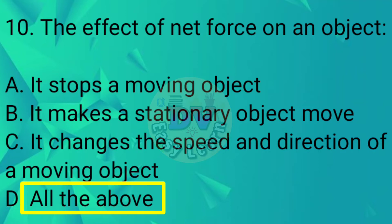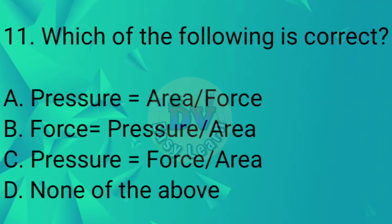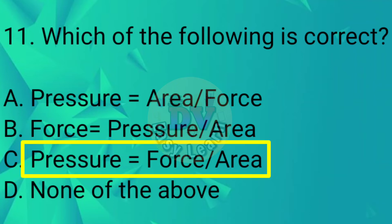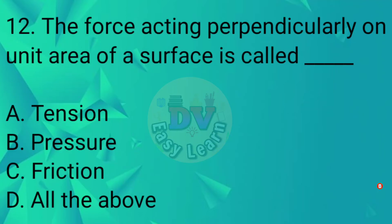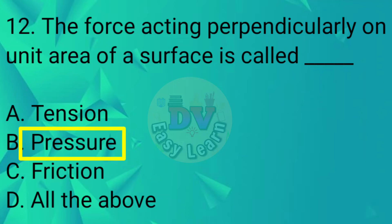Question No. 11: Which of the following is correct? Correct answer: Pressure is equal to force divided by area. Question No. 12: The force acting perpendicularly on unit area of a surface is called — Correct answer: Pressure.